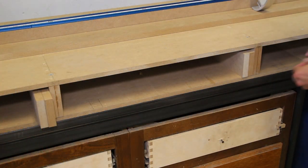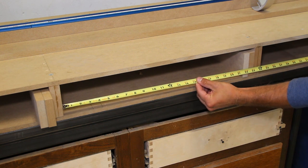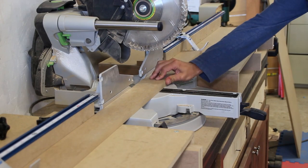To measure for the front and back I place the two sides in the drawer cavity and measure. I cut one eighth inch less to allow for a sixteenth inch on each side of the drawer.